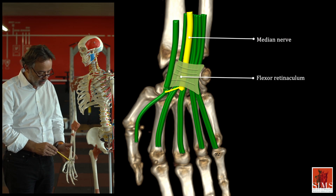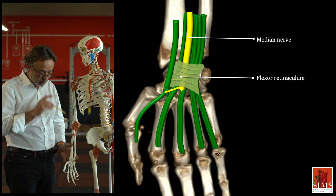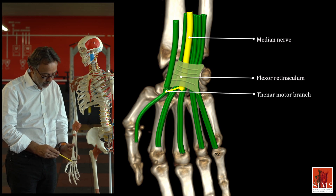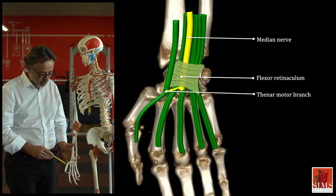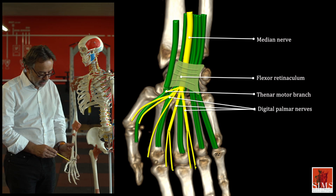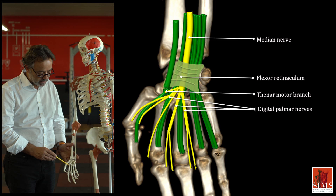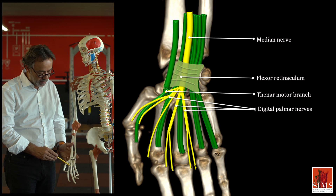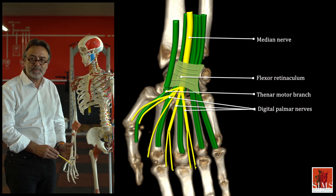At the carpus, it splits into two terminal branches: one lateral for the thenar muscles, and the second sensory-motor for the interosseous muscles of the first, second, and third interdigital spaces.